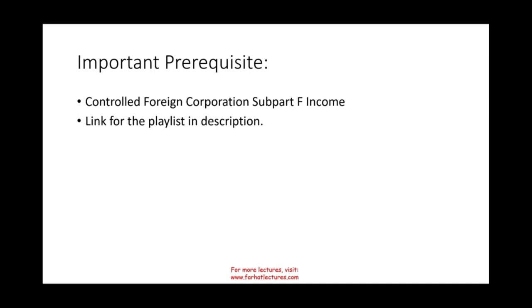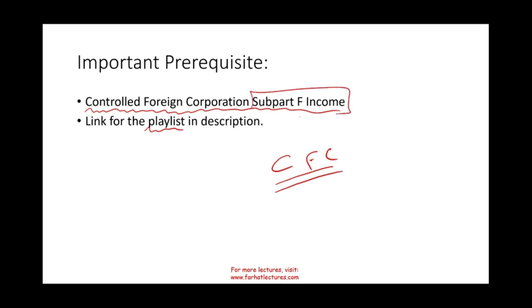An important prerequisite for this session is understanding the concept of controlled foreign corporation and subpart F income, because CFC and GILTI are in a sense very similar in concept. So first I'm going to go over the controlled foreign corporation concept, then I will explain GILTI, because it will make it much easier putting GILTI into a historical perspective. The link for this is in the description. If you don't understand how CFC works or subchapter F, make sure you view that lecture before continuing with GILTI — it will make your life much easier.